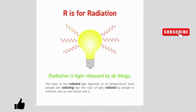R is for radiation. Radiation is light released by all things. The color of the radiated light depends on its temperature. Even people are radiating, but the color of light radiated by people is infrared, and so we cannot see it.